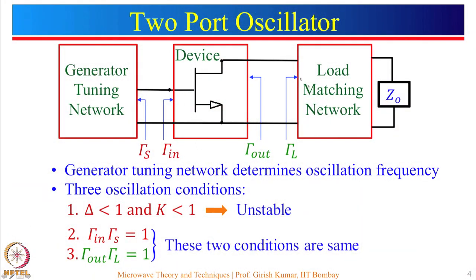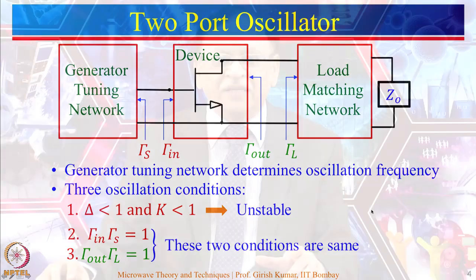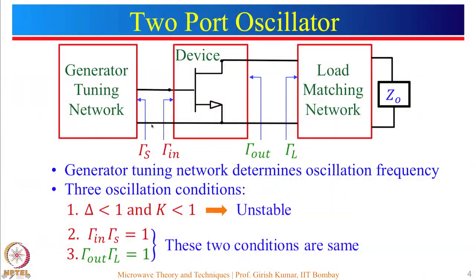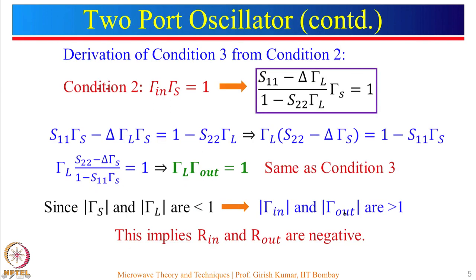Then we started with the two-port oscillator configuration, where we started with the unstable design when delta is less than 1 and k is less than 1. We saw that oscillation conditions occur when gamma_in multiplied by gamma_s equals 1, and gamma_l multiplied by gamma_out equals 1. If one condition is satisfied, the other is automatically satisfied, as we saw in the derivation.